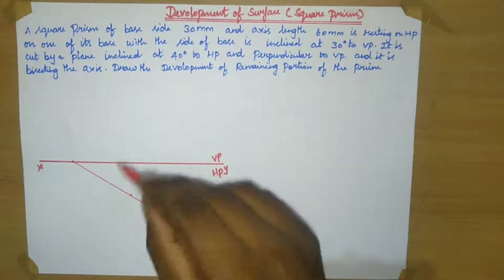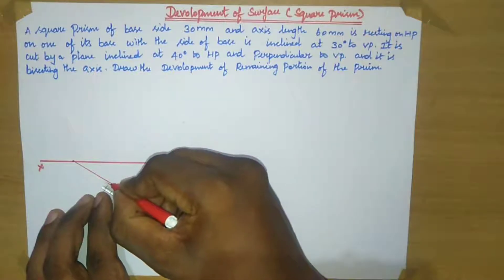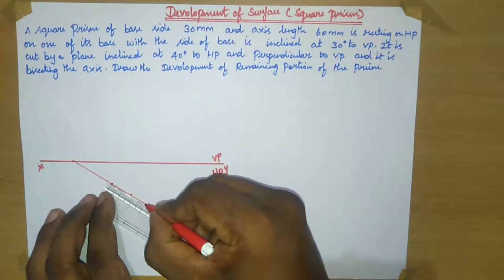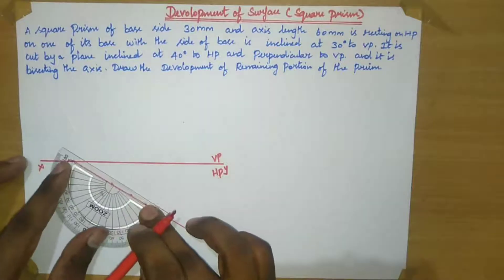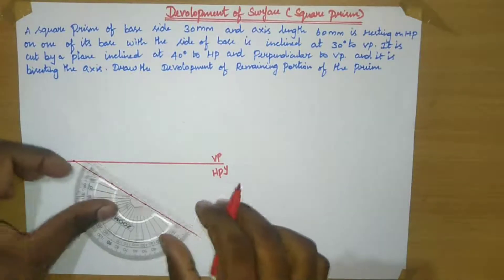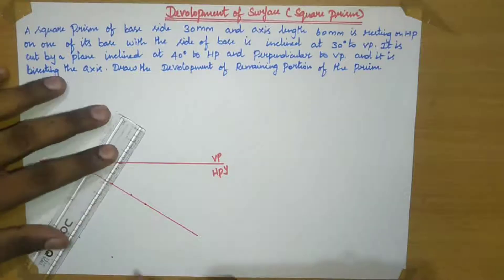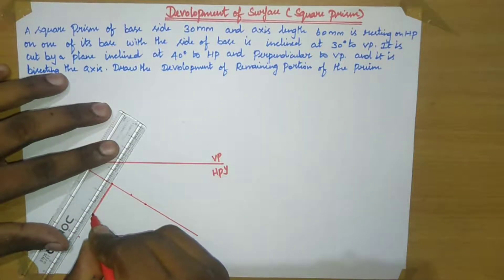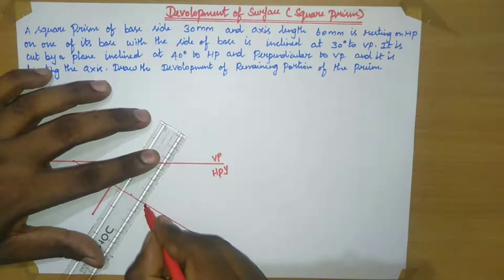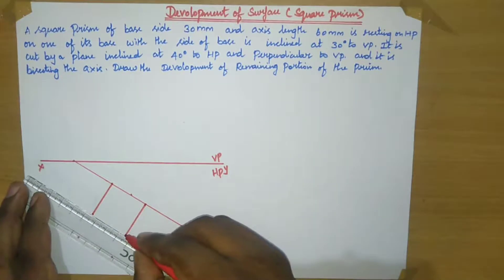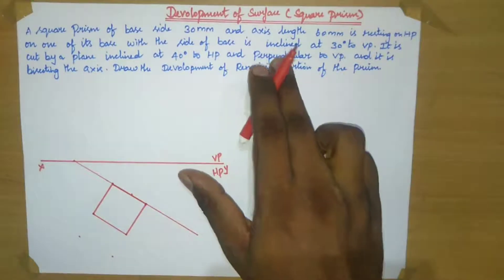So along this line we can see the 30 mm base side of the square. So take 30 mm base side of the square. Now place your protractor at this point and take 90 degrees. Draw a line of 30 mm from this point, and again draw a line of 30 mm from the next point. Now join these points. The top view section now has a square with the base inclined at 30 degrees to BP.